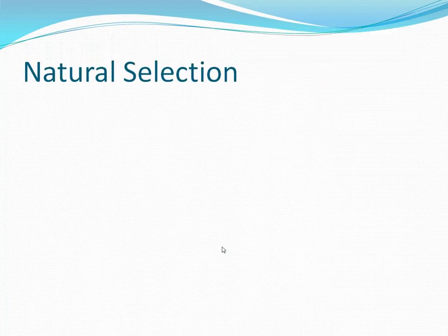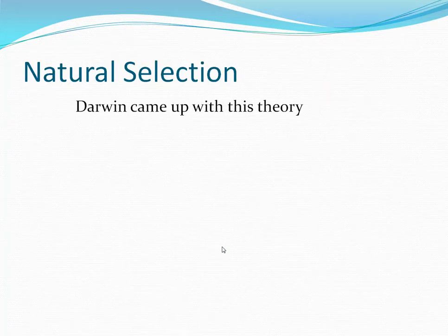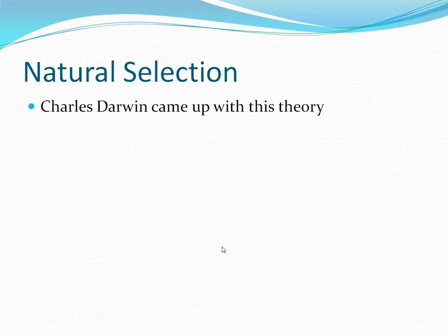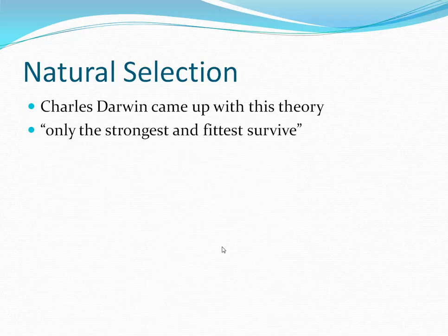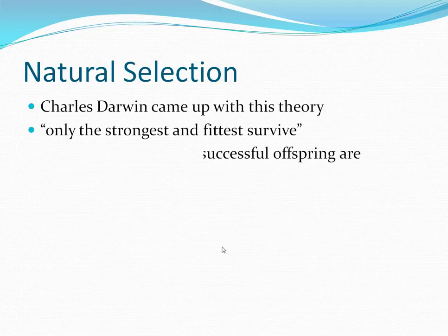Natural selection is a theory that Charles Darwin came up with, and it was all about how the strongest and the fittest will survive in their own environment.